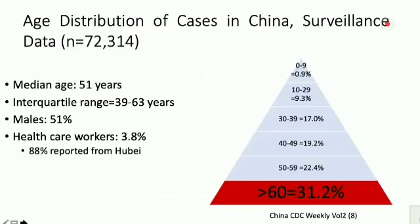The age distribution of cases in China shows that the majority of cases occur in the older age group. The median age is 51 years and the interquartile range is 39 to 63 years — meaning 50% of cases affected in China were in this age range. 51% were males and about 4% were healthcare workers.